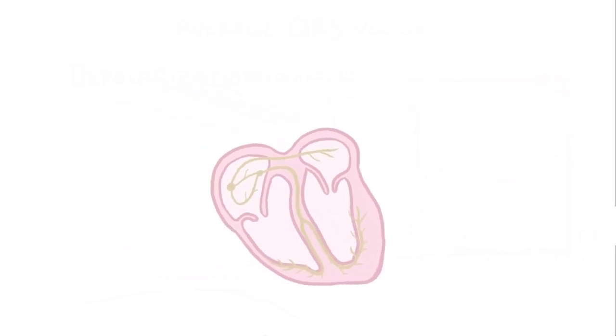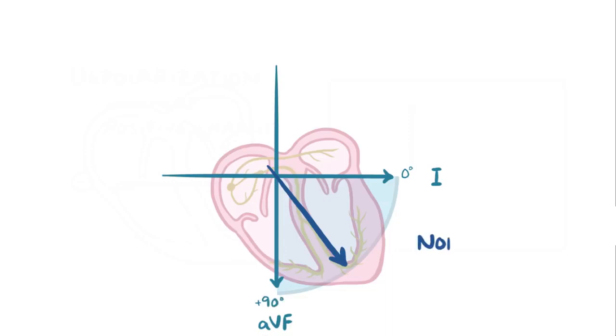So to figure out the direction of the axis, we can start by looking at lead 1 and AVF. Lead 1 moves from right to left across the heart, so anything pointing to the left will be positive in lead 1. AVF on the other hand points downward, so any vector pointing downward will be positive in AVF. Looking at our overall vector from before, it's pointing both down and to the left, both positive, so it's in the bottom left quadrant between 0 and plus 90 degrees, and that's a normal axis.